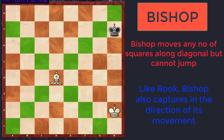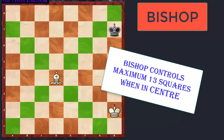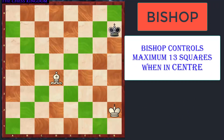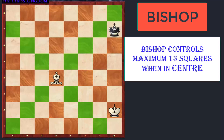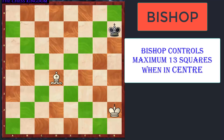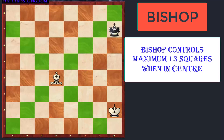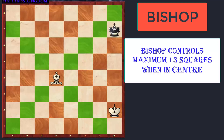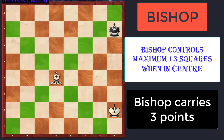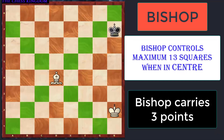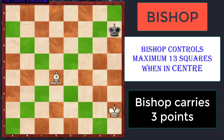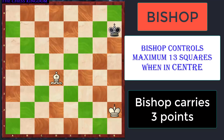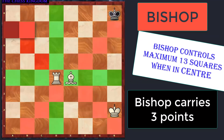If you carefully observe this board, when the Bishop is kept at the center, it controls a total of 13 squares. Just to have a comparison of its importance with the other pieces, it is assigned a total of 3 points.